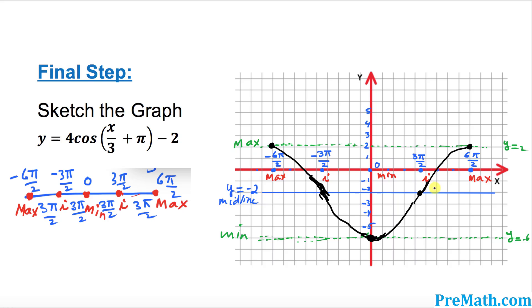This is called the five point method to sketch a graph. The graph keeps going on and on in both directions. Thanks for watching.